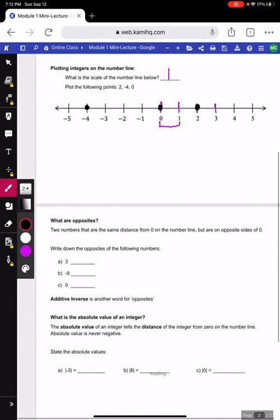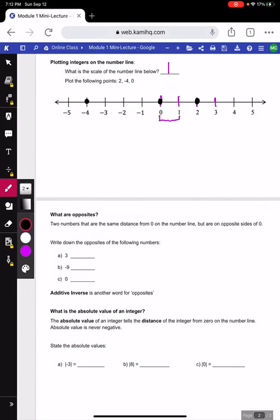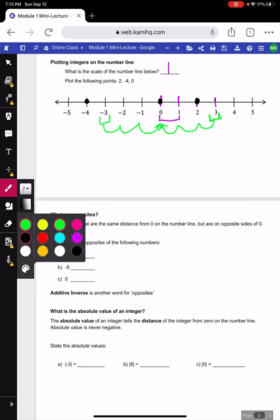Next up, we're going to talk about what are opposites. Opposites are two numbers that are the same distance from 0 on the number line, but are on opposite sides of 0. For example, if we look back up here on our number line, 3 would have an opposite of negative 3. That's because positive 3 is 3 spots from 0, and negative 3 is also 3 spots from 0. So they're the same distance from 0 on opposite sides of the number line.